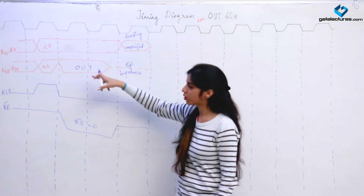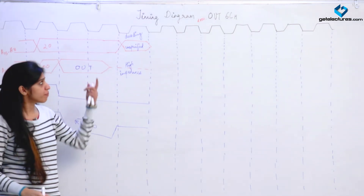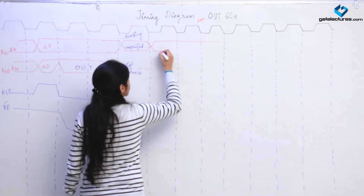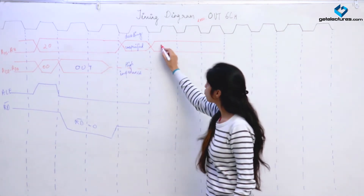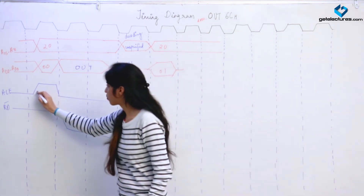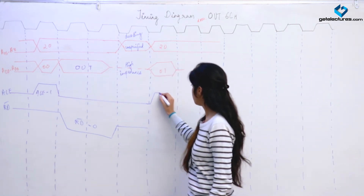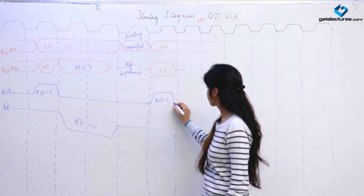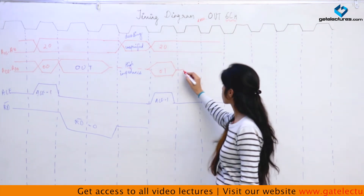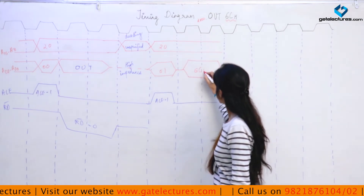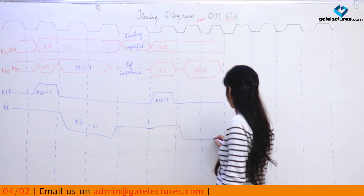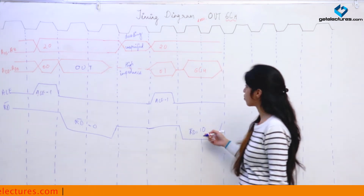After we have got the instruction OUT, PC gets incremented and the address 2001 gets loaded. ALE is made 1 to enable the address latch. Now what is going to come on the data bus? The value stored at 2001 — which is the I/O port address 6C — is going to be loaded onto the data bus. Read bar is an active low signal, so we make it 0 to read this data from memory.